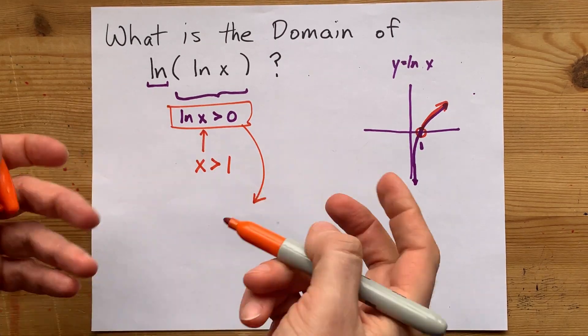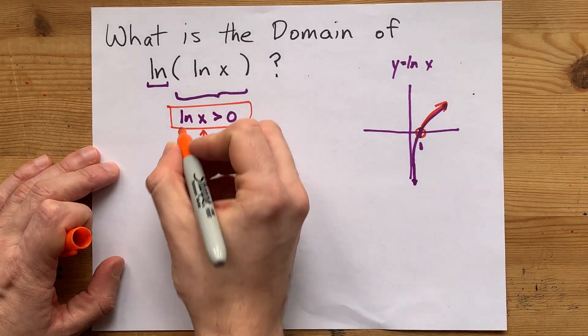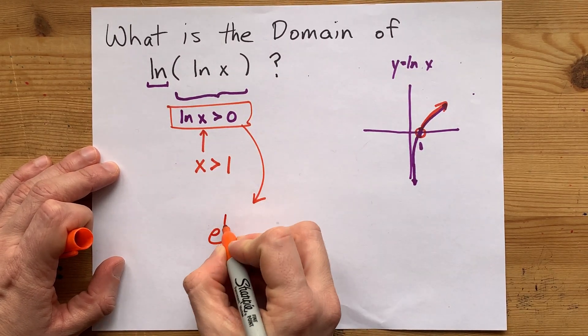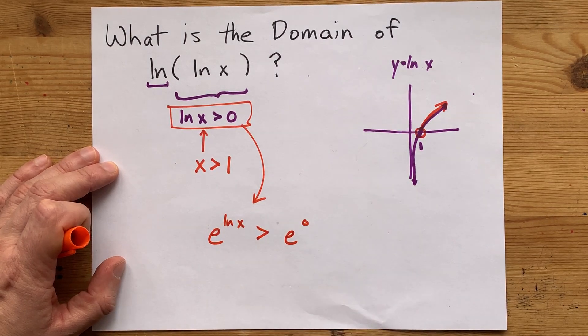How do you undo ln? Well, it's the inverse of e to the power of something. So e to the power of this side of the equation needs to be greater than e to the power of this side of the equation.